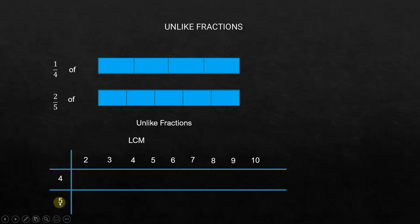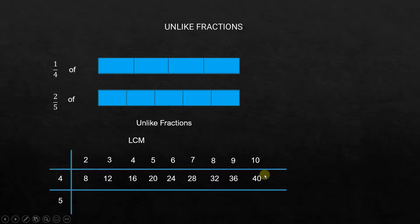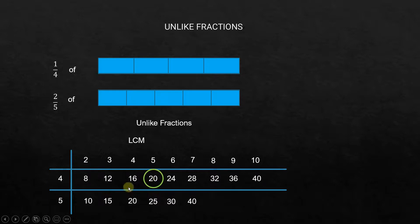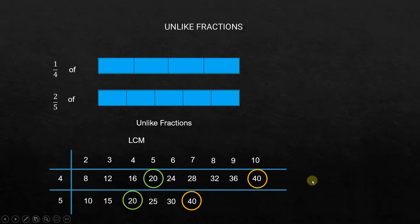We have 4 and 5. Let's write the multiples: multiples of 4 are 4, 8, 12, 16, 20, and so on. Multiples of 5 are 5, 10, 15, 20, and so on. When we write down these multiples, we find that 20 appears in both — 4 times 5 is 20, and 5 times 4 is 20. This is the first common multiple, so it is the lowest common multiple of 4 and 5.